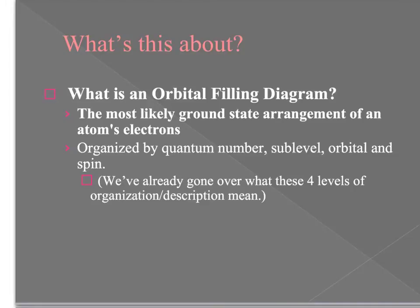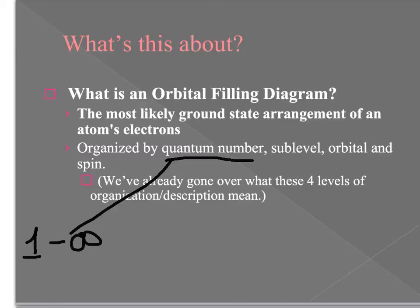The first thing we need to know is what an orbital filling diagram actually is. An orbital filling diagram is a way that chemists represent the most likely arrangement of an atom's electrons when they're in their ground state. They are organized by quantum number, which represents the principal energy of an atom and goes from one to infinity.